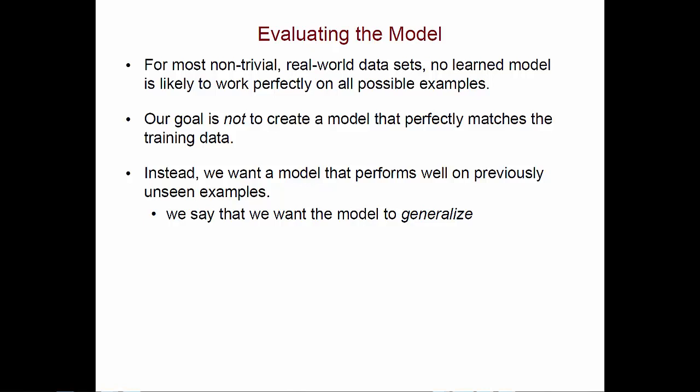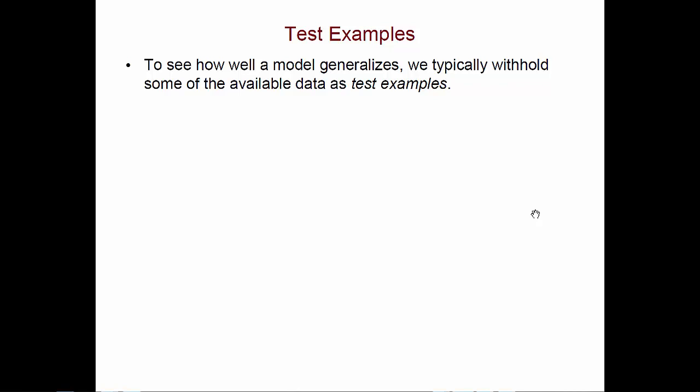It's able to go beyond the specific examples that were used to train it and to handle more general instances of whatever it is it's trying to classify. In the case of our model from the previous video, we want to be able to predict whether a customer we've never seen before will buy a computer or not. So how do we actually determine whether our model is able to do this? What we typically do is withhold some of the available data as test examples. We don't actually use it for training. Instead, we keep it for figuring out how accurate the model is going to be.